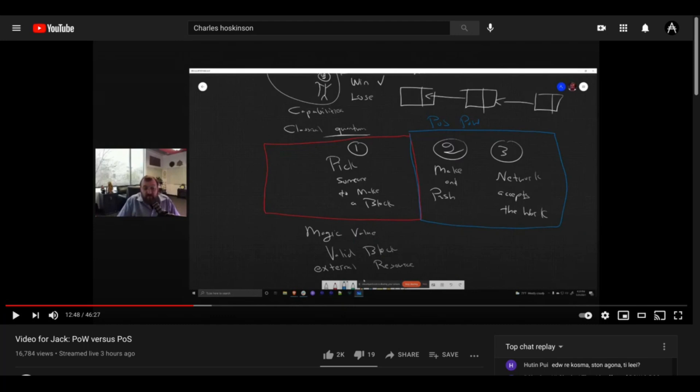And here's where he makes a really good point. Steps two and three, the making and distribution of the block and acceptance of it into the blockchain, those are the same. Those two steps are exactly the same for proof of work and proof of stake where they differ is just on one, how you pick someone to make the next block.